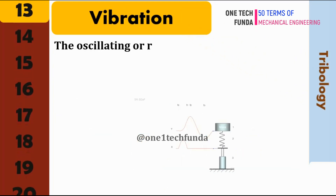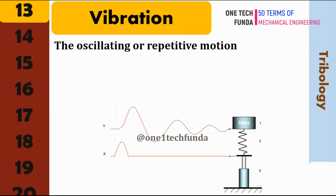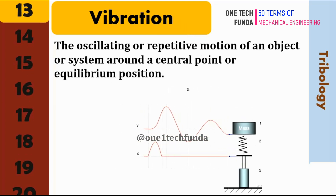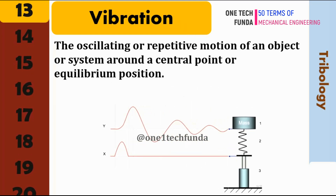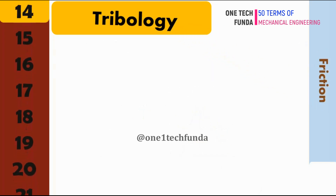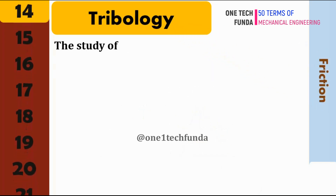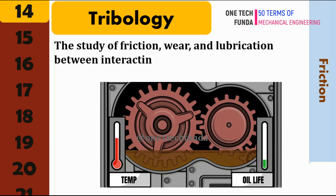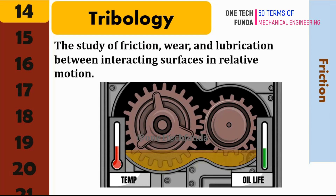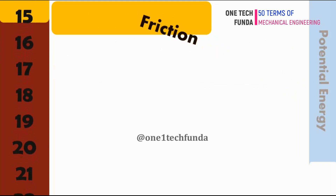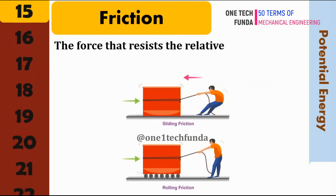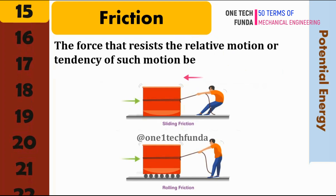Vibration: refers to the oscillating or repetitive motion of an object or system around a central point or equilibrium position. Tribology: the study of friction, wear, and lubrication between interacting surfaces in relative motion. Friction: the force that resists the relative motion or tendency of such motion between two surfaces in contact.